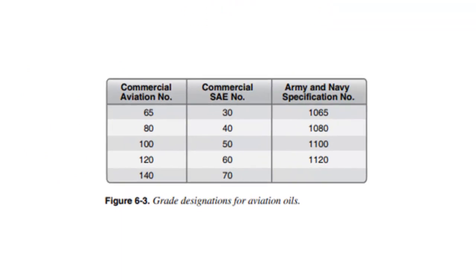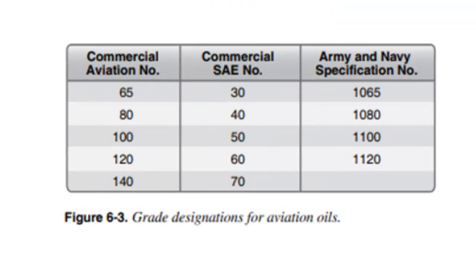Oil viscosity is a description of how thick or how thin the oil is. We use a slightly different numbering system than the commercial one, and for the grades we typically use, it's exactly double. So an SAE 40 weight is an Aviation W80. An SAE 50 is equivalent to an Aviation W100, and those are the two single viscosity oils you're most likely to run into. However, the SAE number is also printed right on the bottle in most cases.